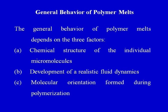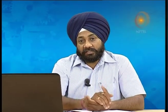First, let us see the general behavior of polymer melts. We know there are different types of polymers — thermosets and thermoplastics — and they have to be converted into desired shapes and sizes. When the polymer melts, how will it behave, and on what factors does the polymer melt depend? The general behavior of polymer melts depends on three factors, which need to be considered when planning any processing technique for plastics.